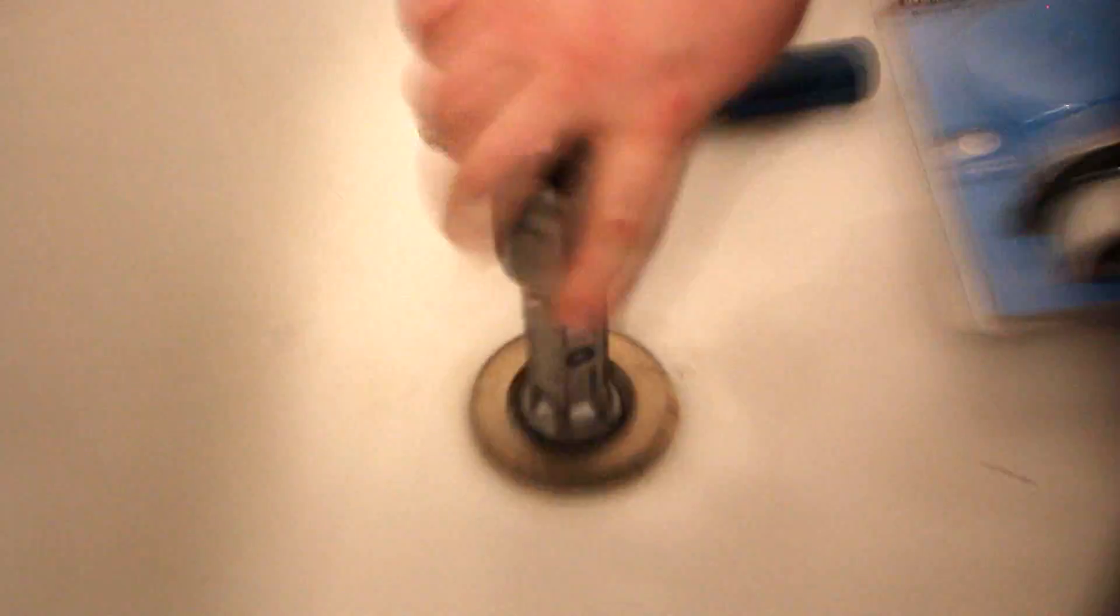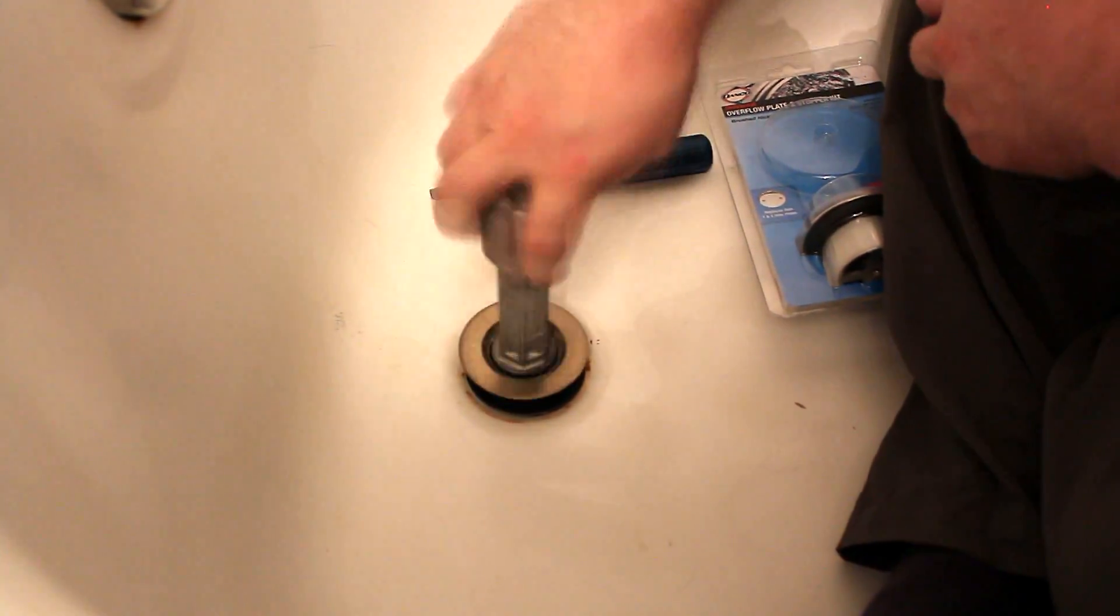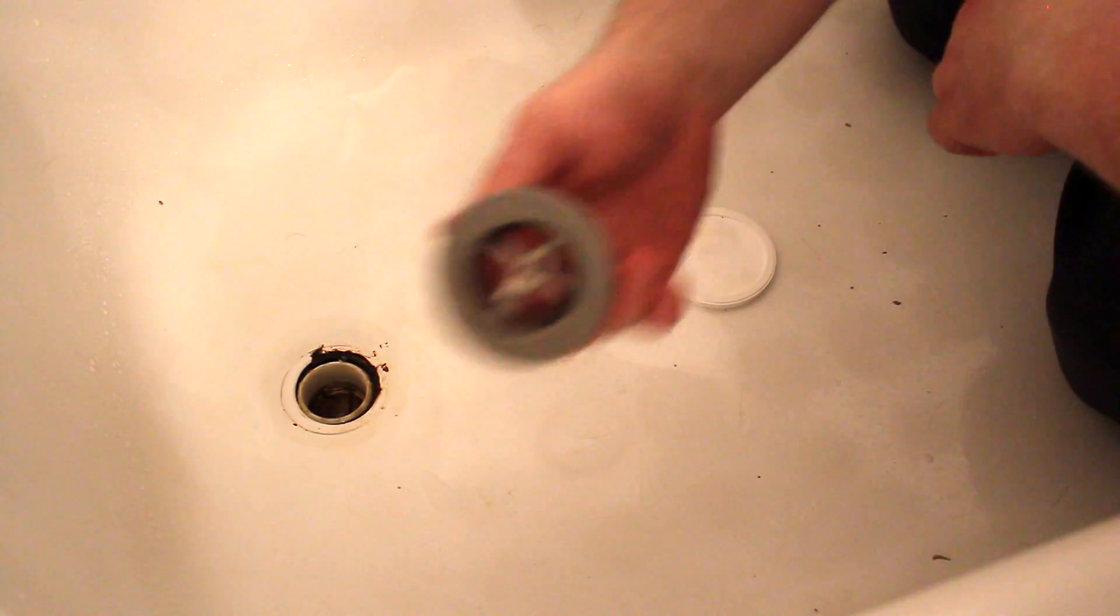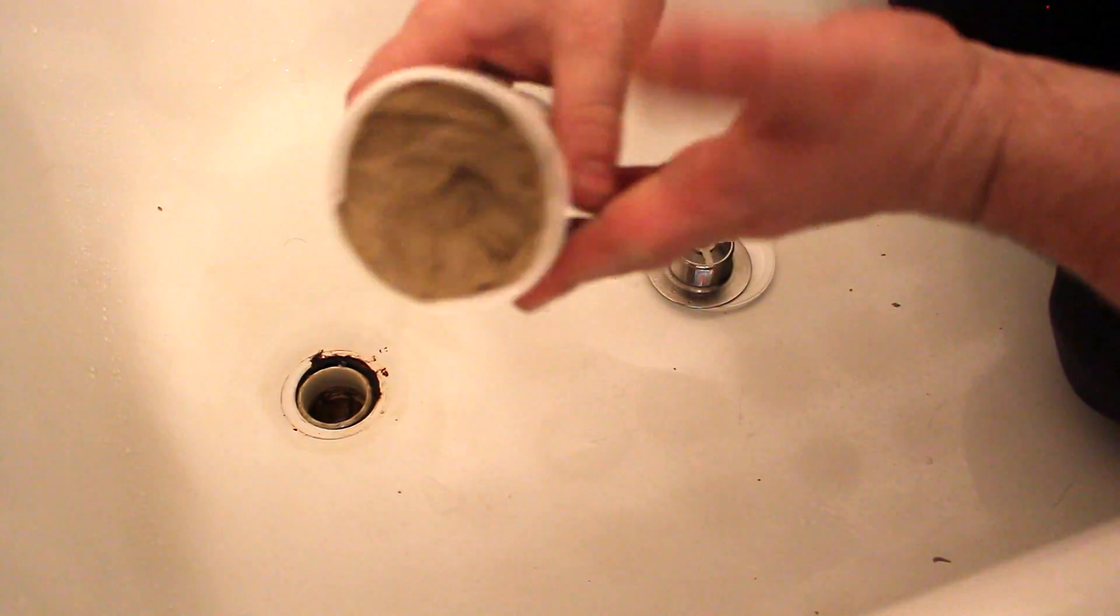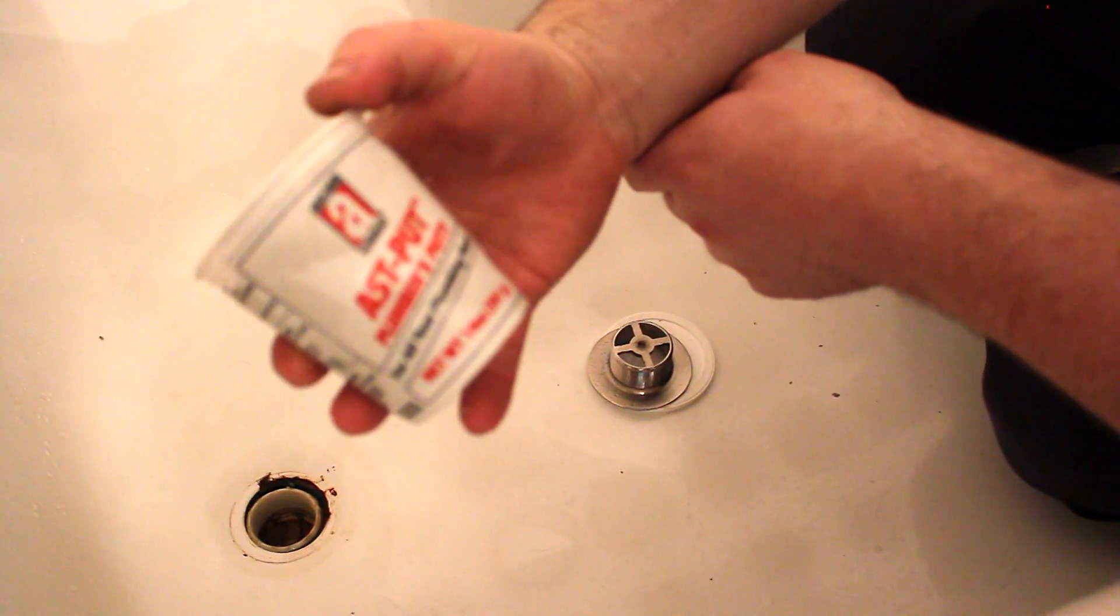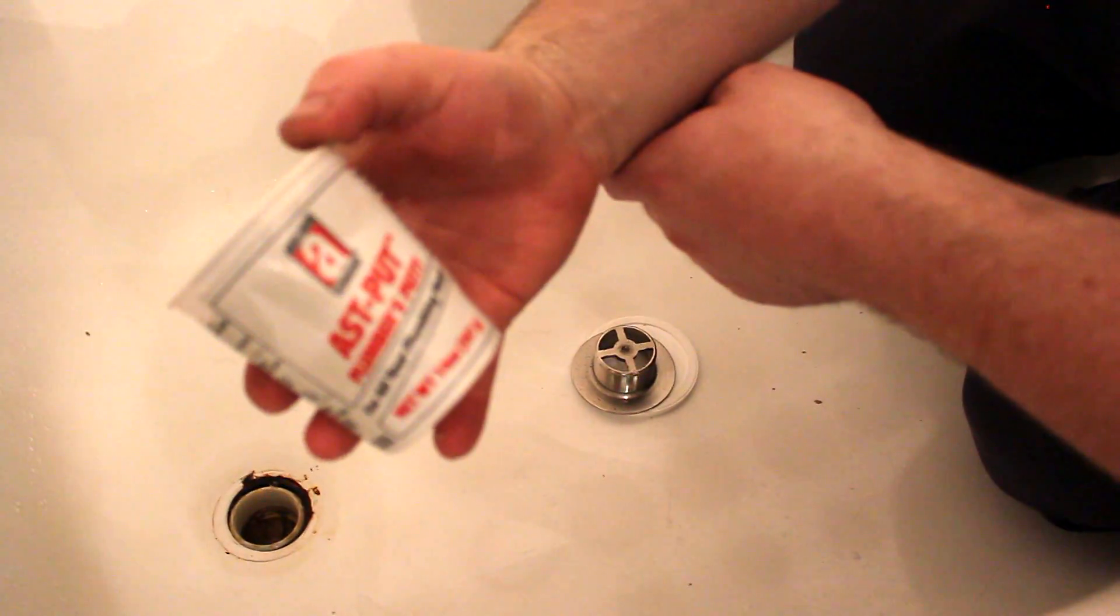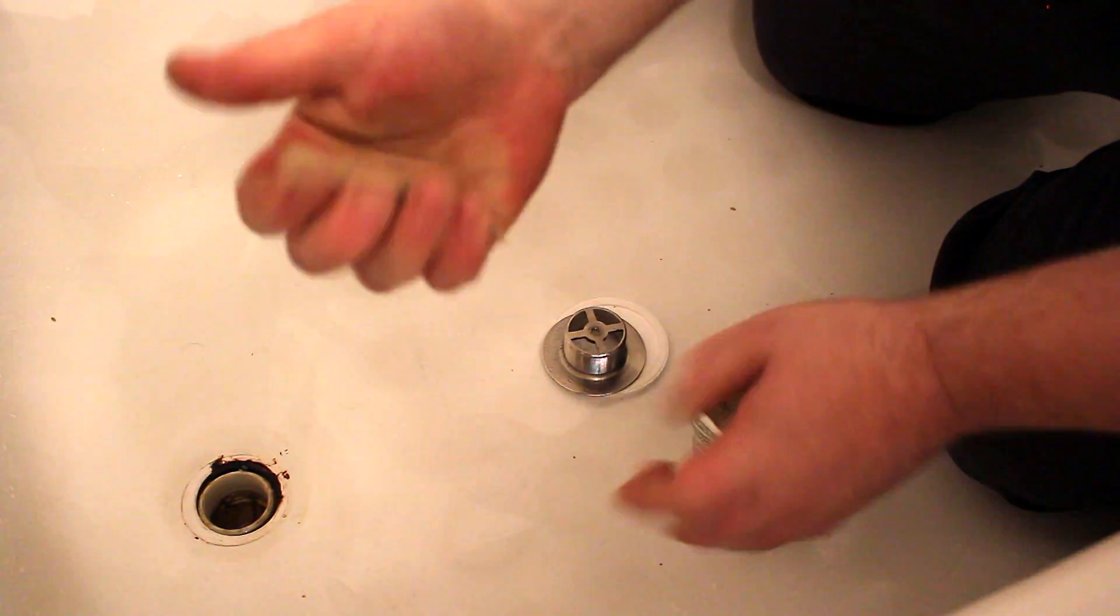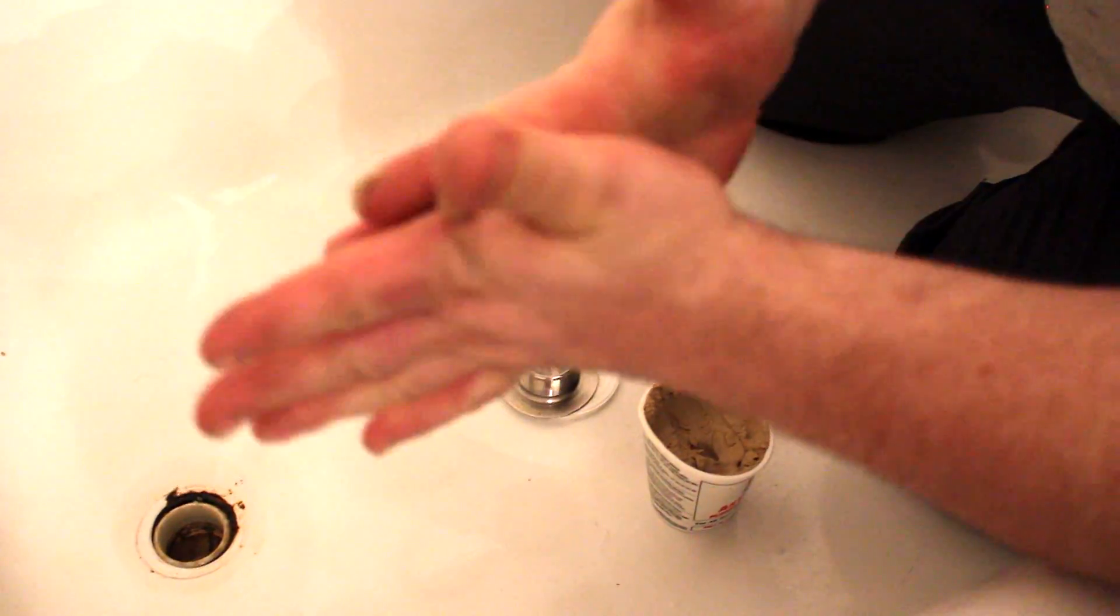Okay, we removed the old stopper, took one out from the kit. We're gonna use plumber's putty. I'm gonna take a little bit of it, about that much, and then roll it nice and thin.